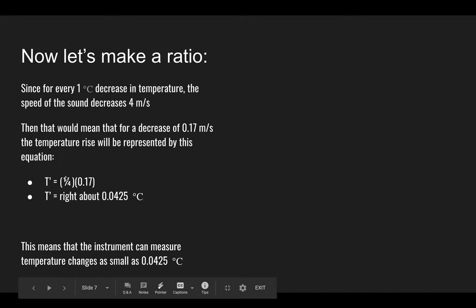Since the Celsius is on top and the meters per second are on the bottom, and you're multiplying by another meters per second, the meters per second will cancel out and we're left with degrees Celsius, which makes sense. When you plug it into the calculator, the smallest measurable temperature change is 0.0425 degrees Celsius.